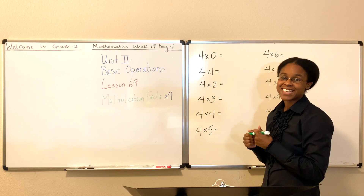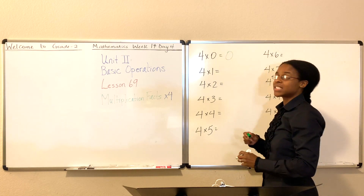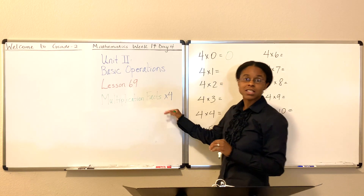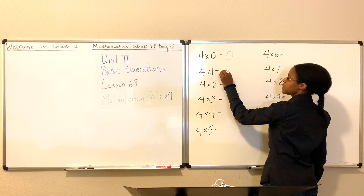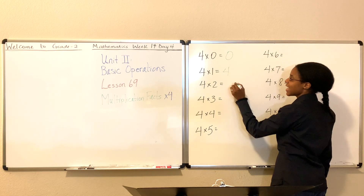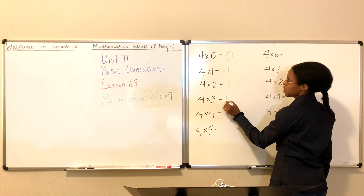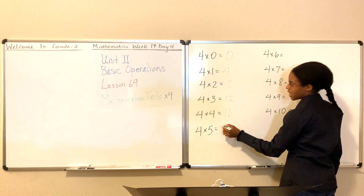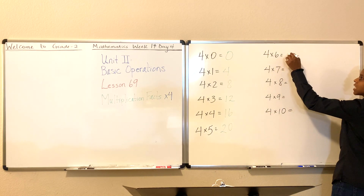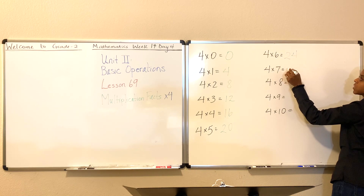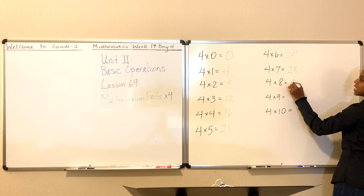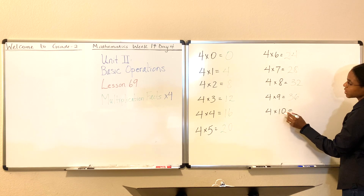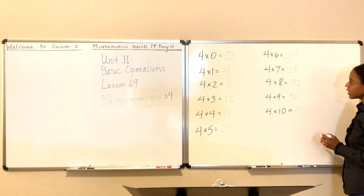Four times zero is zero. If you do not know the answer, just look at the multiplication table and commit it to memory. Today we're just talking about times four. Four times one is four. Four times two is eight. Four times three is 12. Four times four is 16. Four times five is 20. Four times six is 24. Four times seven is 28. Four times eight is 32. Four times nine is 36. Four times ten is 40. Good job.